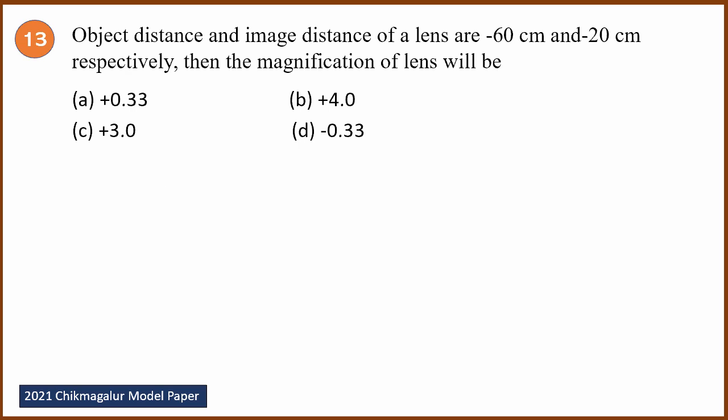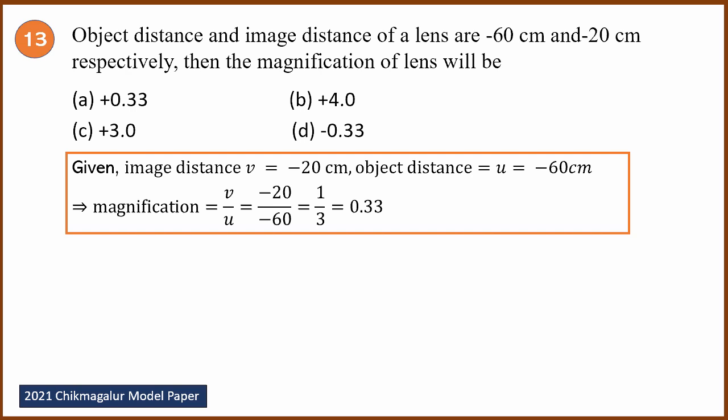Thirteenth question: object distance and image distance of a lens are -60 and -20 respectively. Find the magnification. Magnification = V/U = (-20)/(-60) = 1/3 = 0.333.